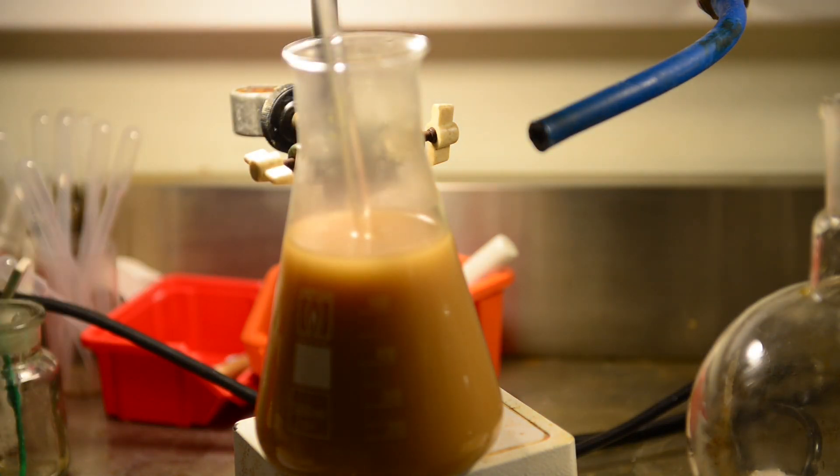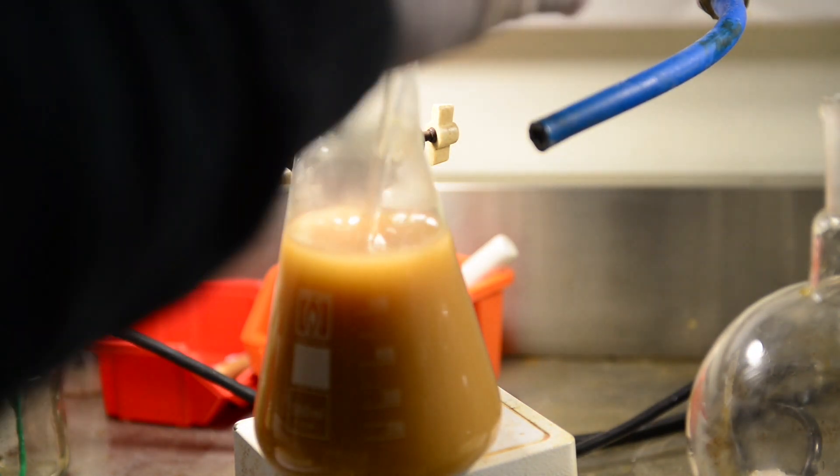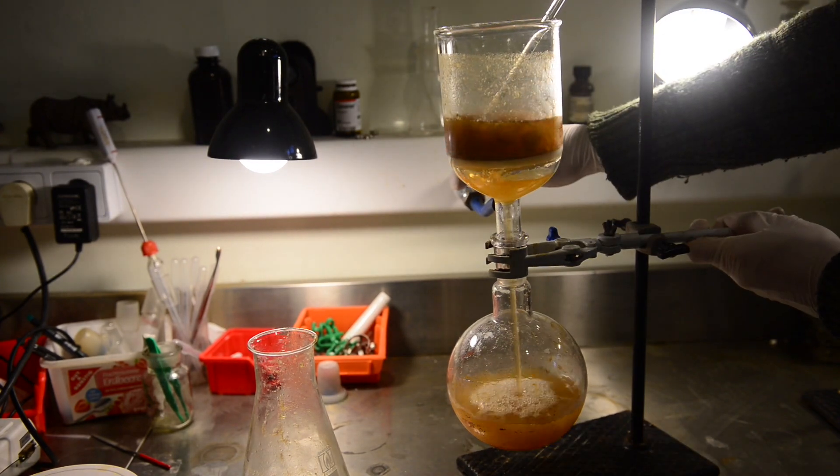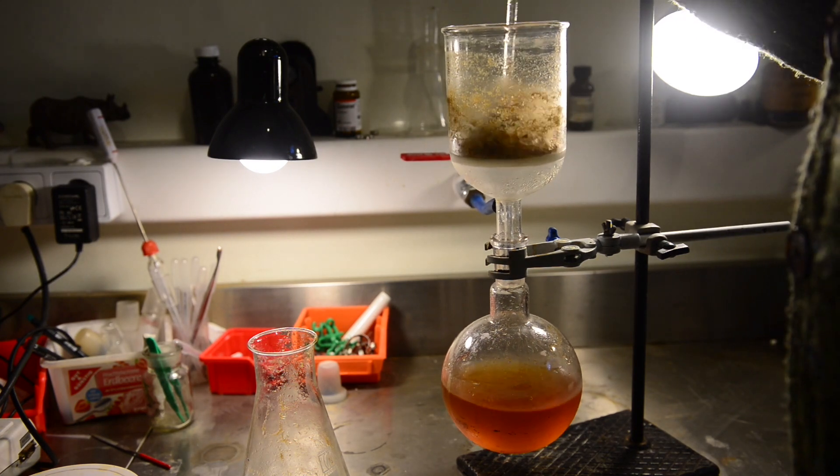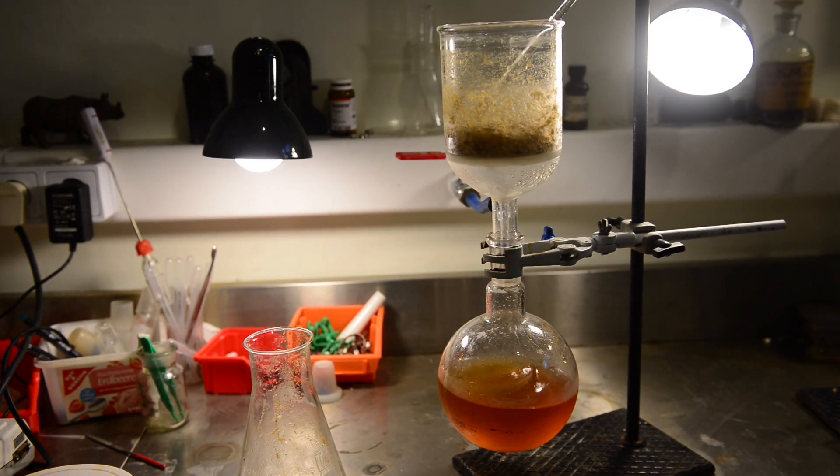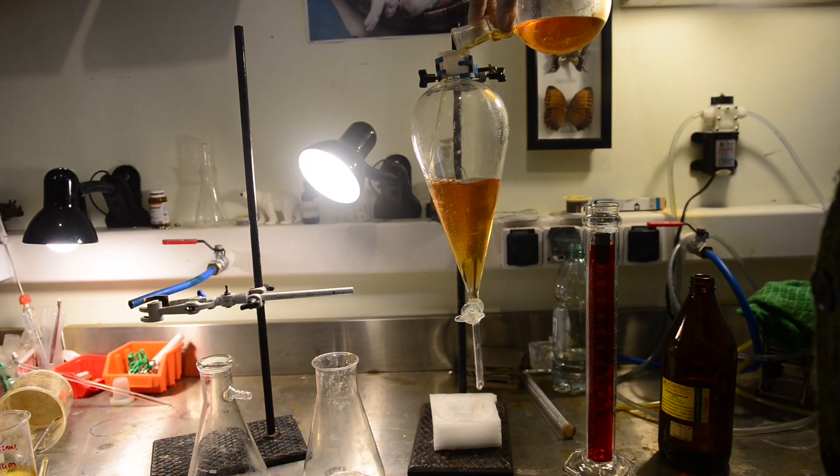On the next day the flask is full of nice yellow brownish crystals. I'm going to filter mother liquor with vacuum. Here we are left with crude protocatechuic aldehyde on the filter. I'm drying it for 15 minutes with vacuum running.